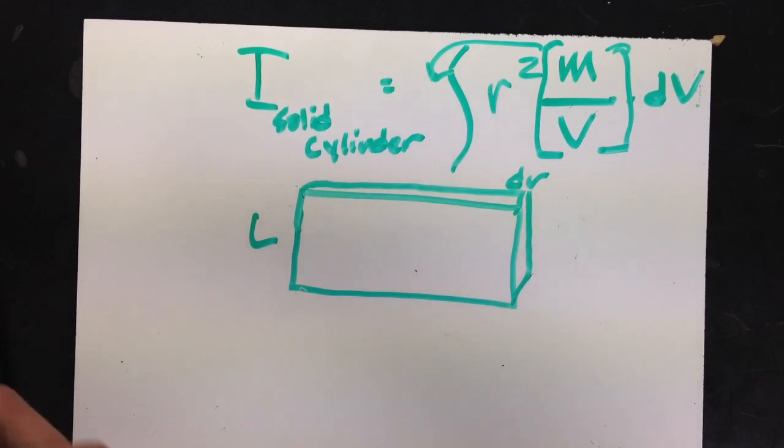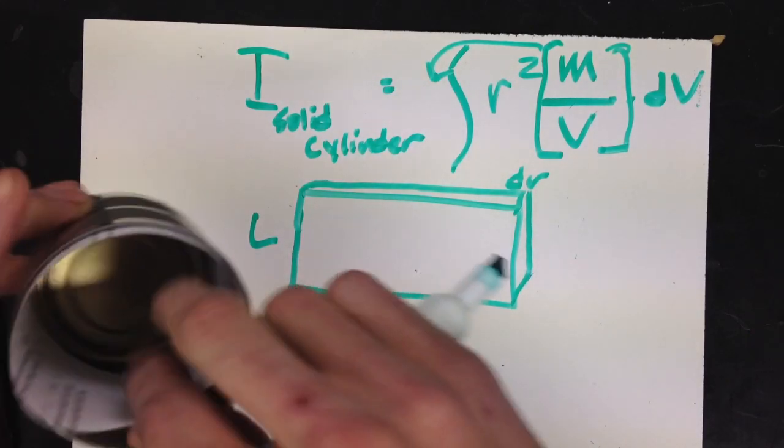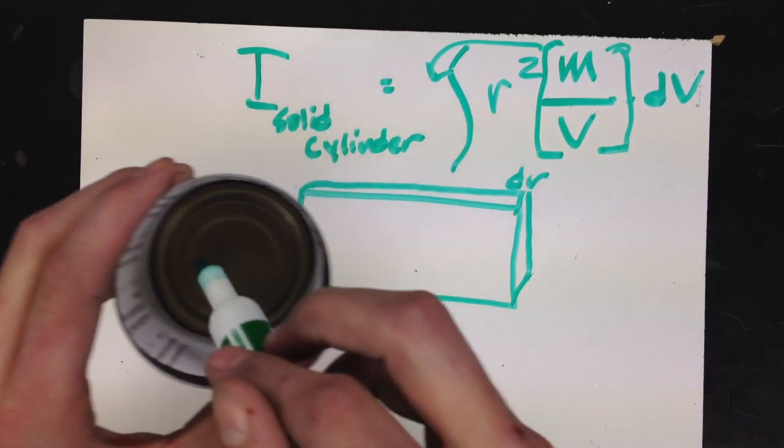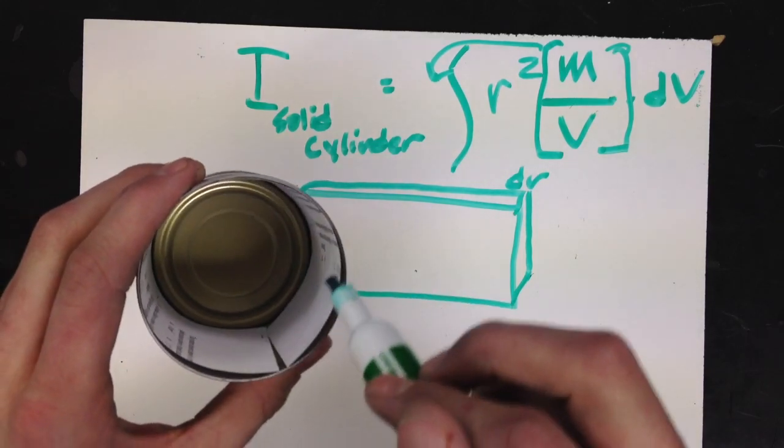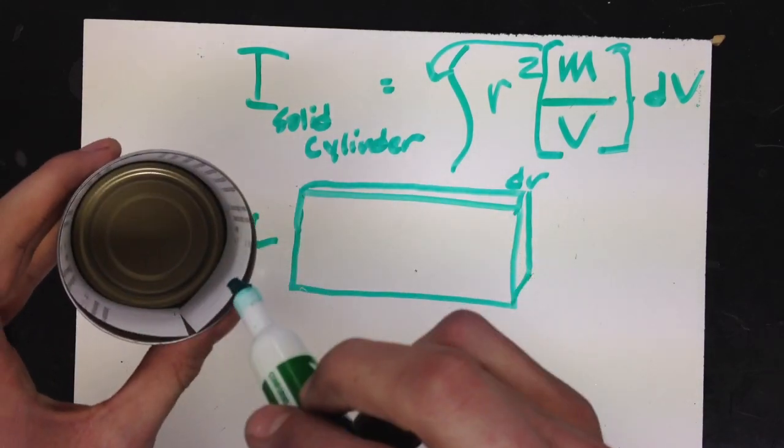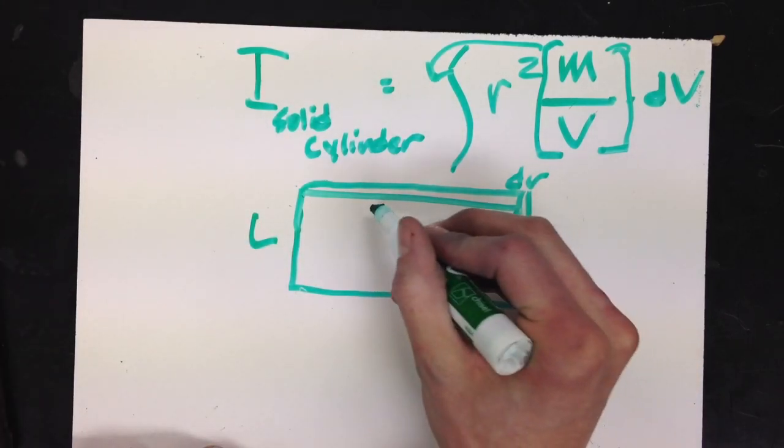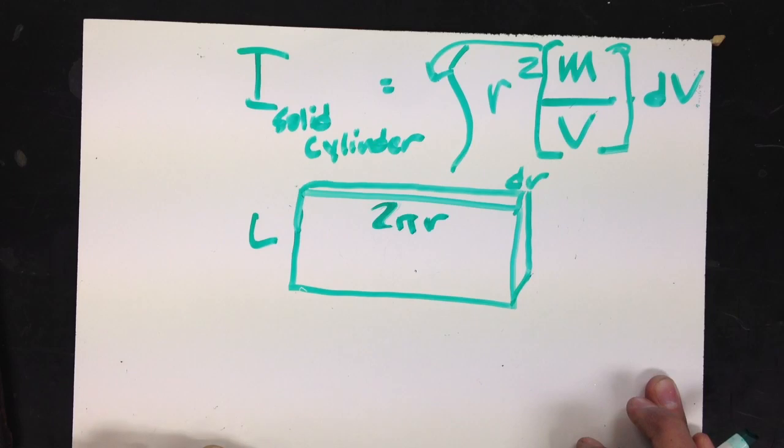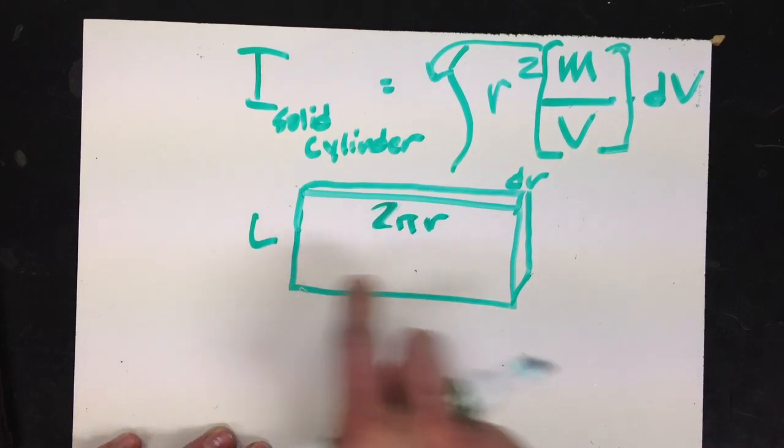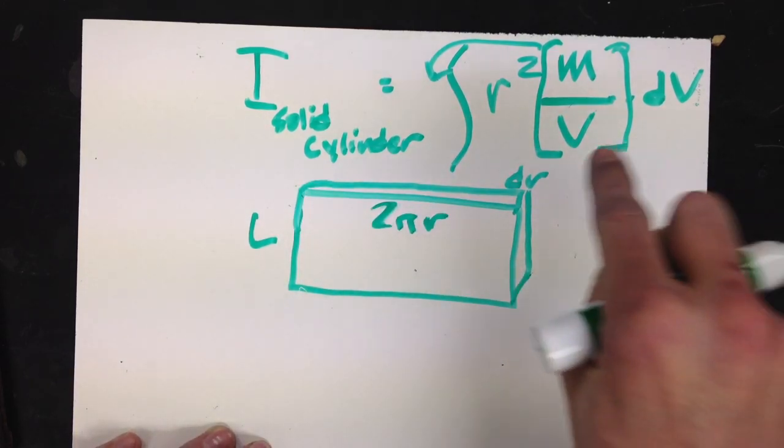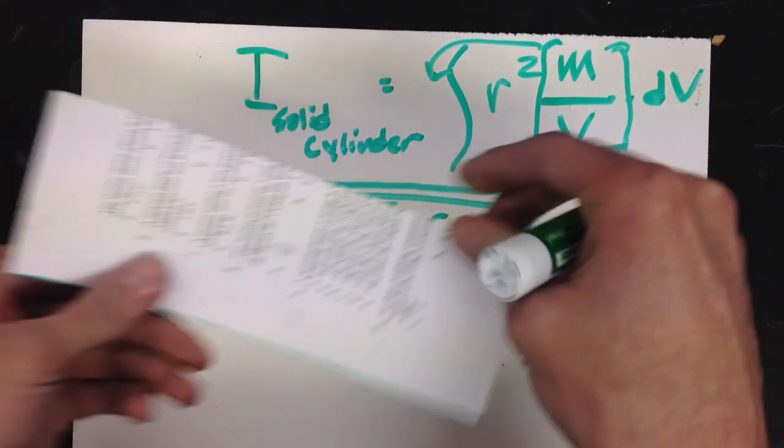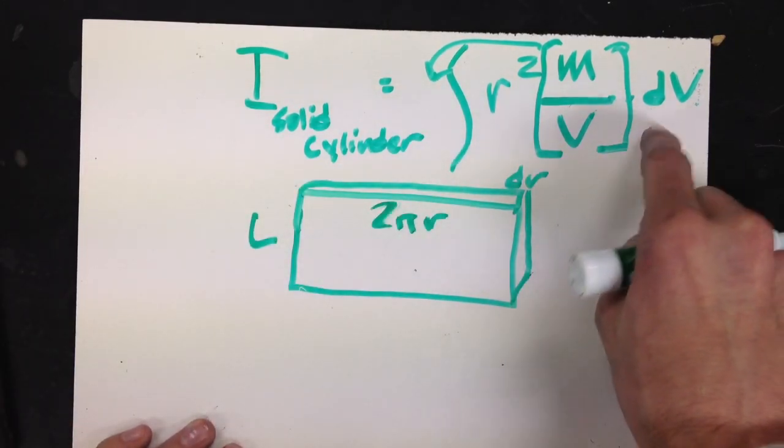So we said that it was a distance r from the axis of rotation. So its radius is r, and I want the circumference. Circumference of a circle is 2πr. So if I take length times 2πr times dr, that tells me the volume of my very thin sheet, which is dv.